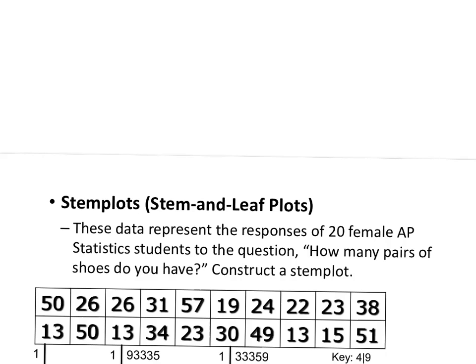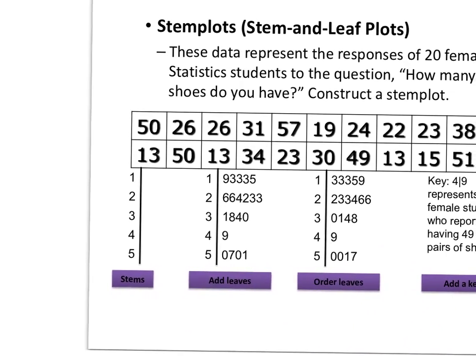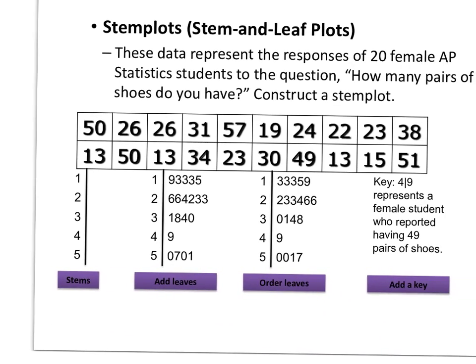As you can see here we have some females with pairs of shoes everywhere from a low of 13 up to a high, looks like 57 is the high. I don't know what girl that is that has 57 pairs of shoes but okay we will count that data. So the first thing we're going to do is we're going to figure out what our stems are. As I mentioned we had a low of 13 up to high of 57.